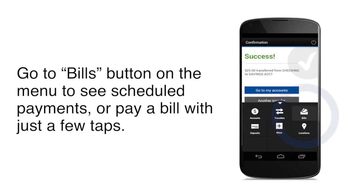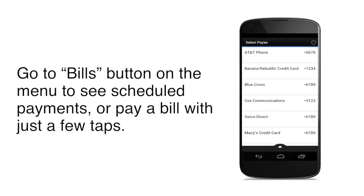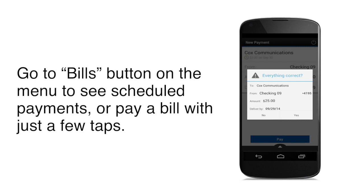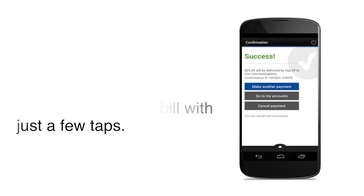Tap the Bills button on the menu to see any payments that you've scheduled, or pay a bill with just a few taps. Just select any payee you set up in your online account. Then, choose the account, amount, and date.